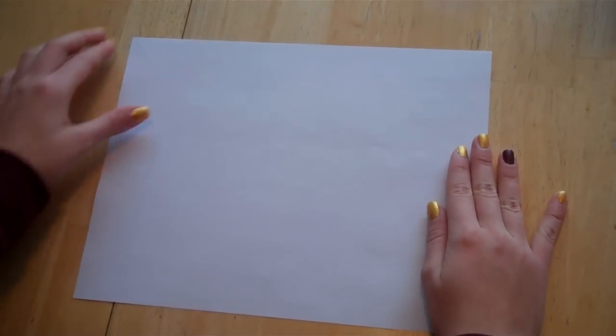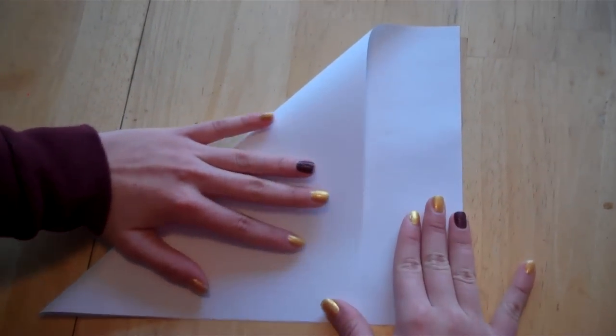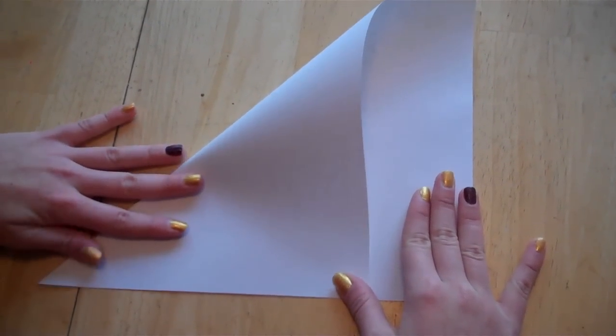You're going to start by taking the top left corner and bringing it down to the opposite edge, lining it up as straight as you can and giving it a really good crease.